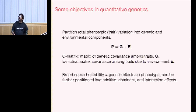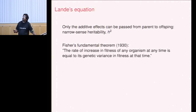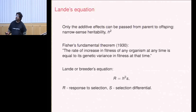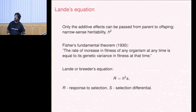A classic version of this goes back to Fisher's fundamental theorem: only the additive effects can be passed on to offspring. This is called narrow-sense heritability. Under this model, the rate of increase in fitness equals its genetic variance in fitness at that time. This is written as the breeder's equation: if you have a measure of fitness H-squared and a selection differential between two phenotypes, the response to selection follows this formula — it's just partitioning the variation.